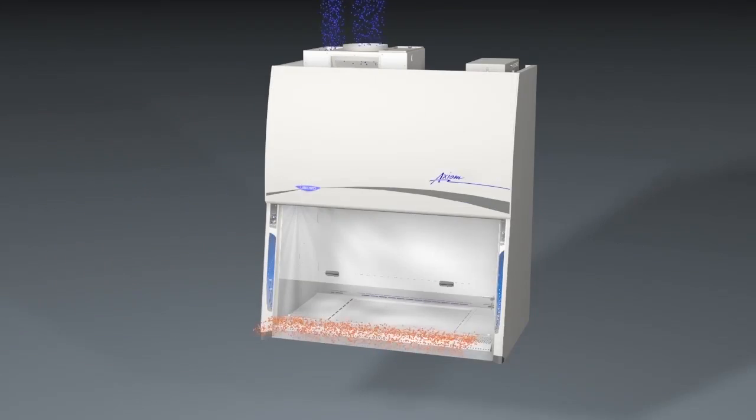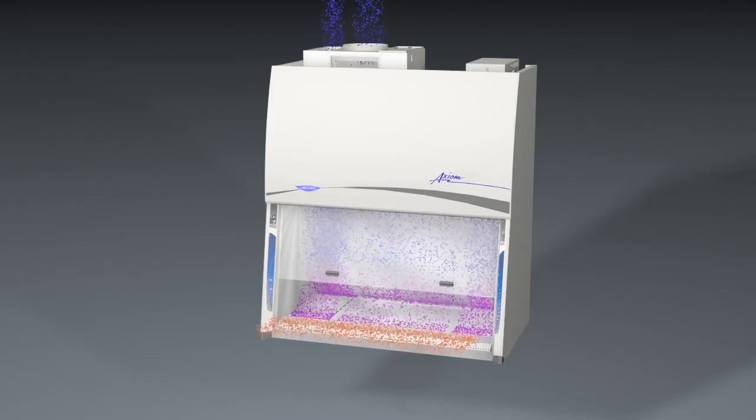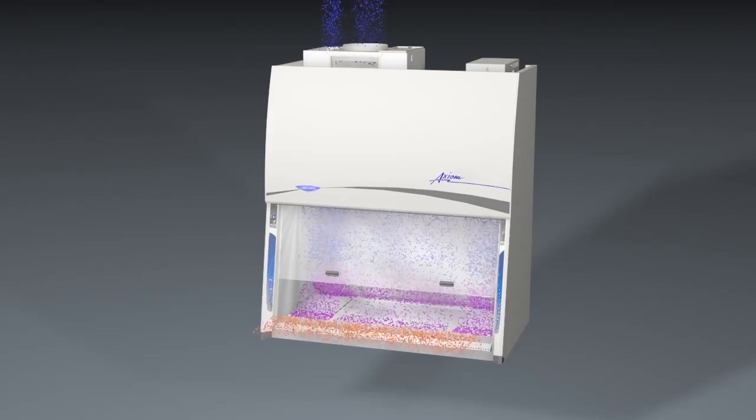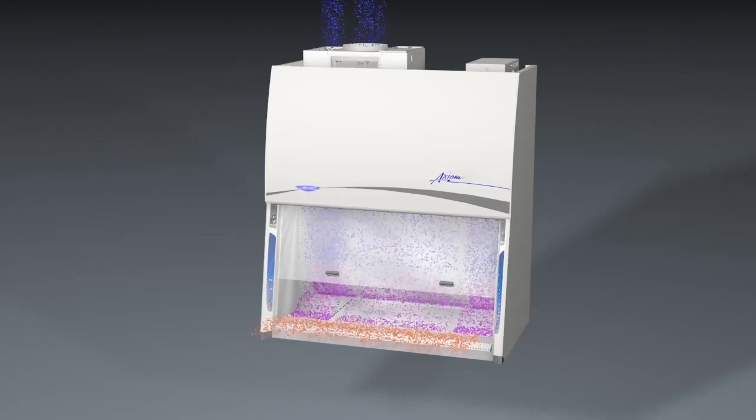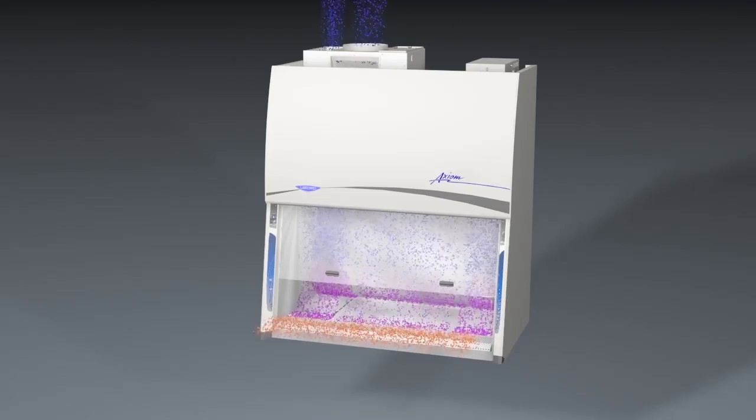Though similar in appearance to other class II BSCs, the Axiom's differentiated and directional airflow bridges the gaps between type A and type B.